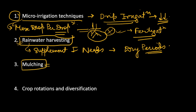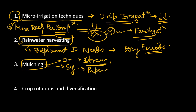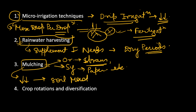Mulching — covering the top layer of soil — is also very important. There are two types of mulch: organic mulch, where we generally use straws and crop waste, and synthetic mulch, which includes paper mulches and plastic mulches. What mulching does is reduce the amount of evaporation, thereby helping in soil moisture conservation. When we conserve soil moisture, less frequent irrigation is required, which helps in sustaining crop production.